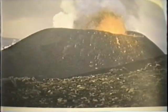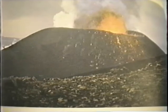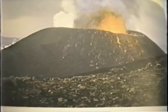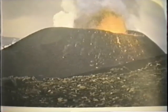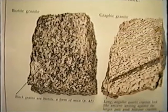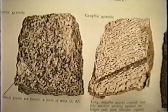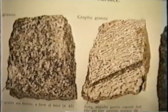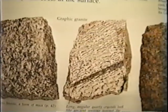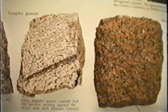Large crystals form in rocks that cool slowly. Granite is one kind of igneous rock formed under the ground. Granite has three kinds of crystals.